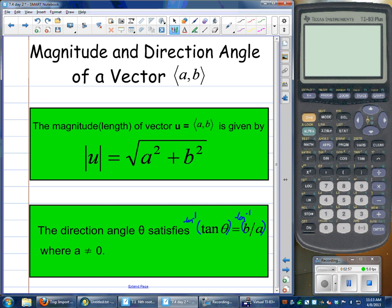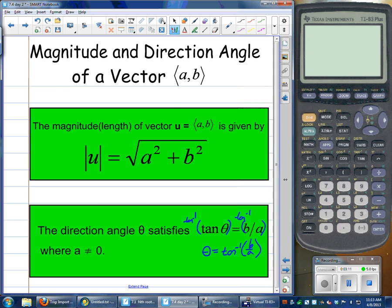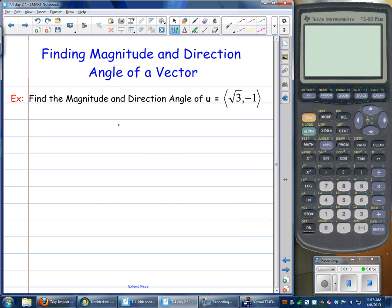And that, then, remember, tangent inverse would cancel tangent, so to actually find the theta value, we'll take tangent inverse of b over a. Alright, so let's take a look at an example there. Sorry, I kind of went through that one kind of quick, but feel free to pause and rewind if necessary.